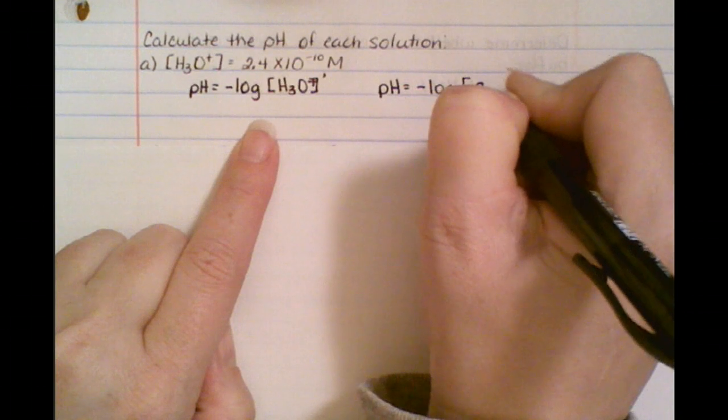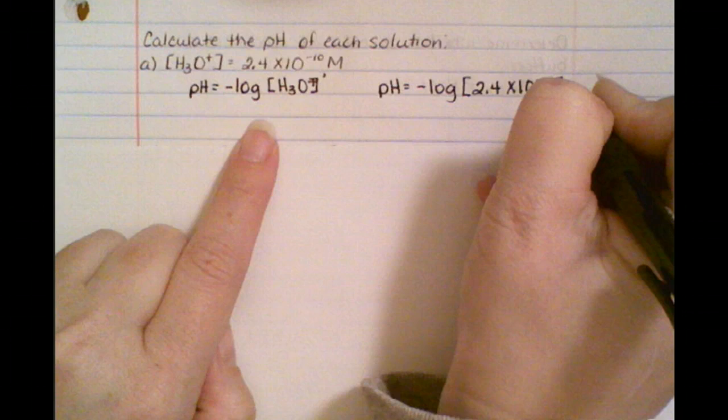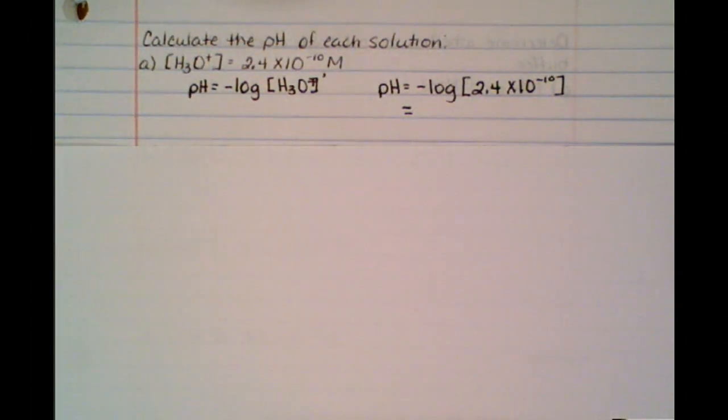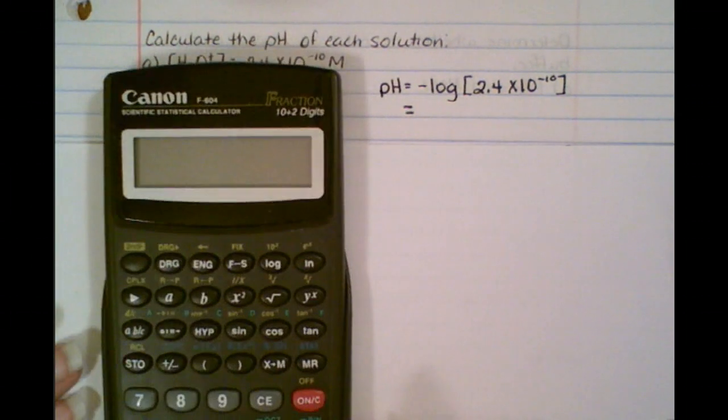So for this one, it's 2.4 times 10 to the minus 10. Okay, so you've got that. You do that on a test, you get partial credit. I've got a problem. I've got to figure out how to put it in my handy-dandy little calculator.